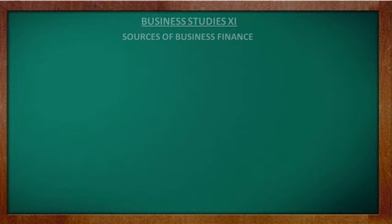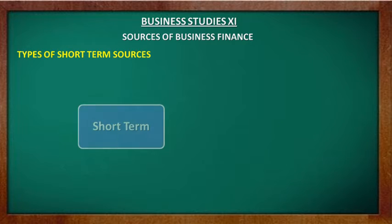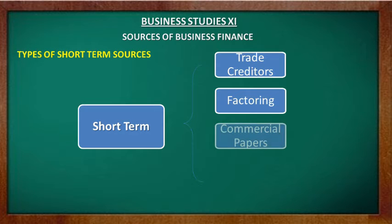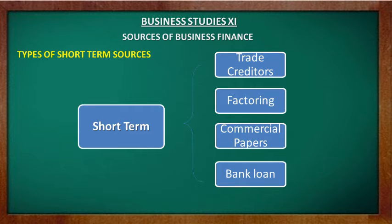Short-term sources fulfill the financial requirement for a period of 1 year and are used to finance current assets like purchasing of raw materials. Examples of short-term sources include trade creditors, factoring, commercial papers, and bank loans when taken for a period of less than 1 year.